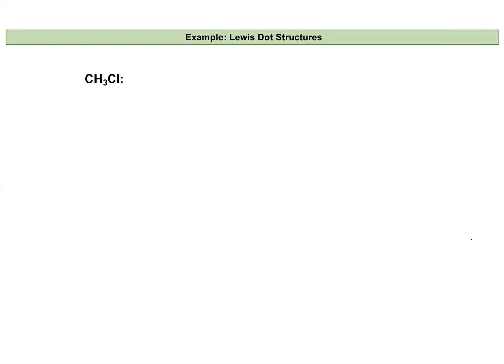Let's walk through two examples. First, a Lewis dot structure that does not have multiple bonds, then one that does. Here is carbon, hydrogen, and chlorine — this is methane monochloride (CH3Cl). Carbon is in group four, so it has four valence electrons. I have three hydrogens, each with one electron, and chlorine, which is a halogen with seven valence electrons.